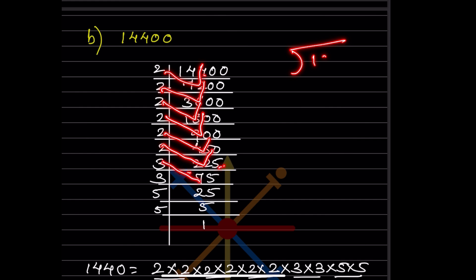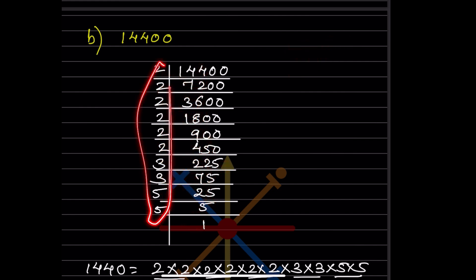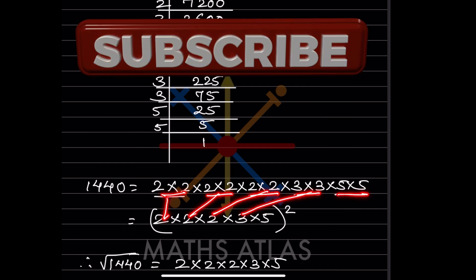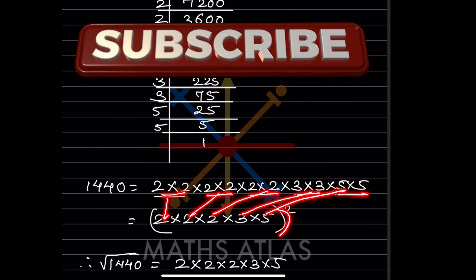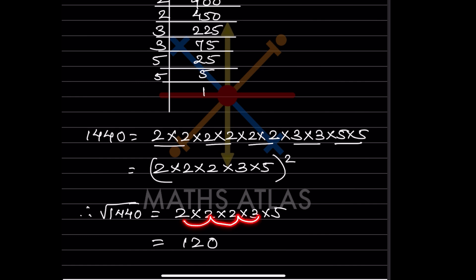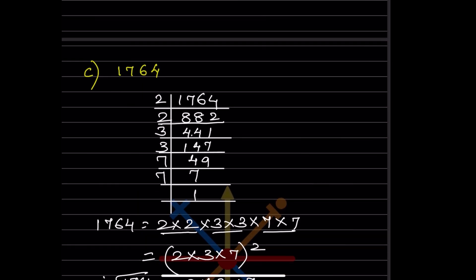For the next number, this is not divisible by 2 at first, so we go with 3, then 5. You write the factors found over here and pair them up. Just write each pair's factor only once and square it, then when you put the root sign, the square and root cancel. When you multiply, you get 120. So the square root of 1440 is 120.